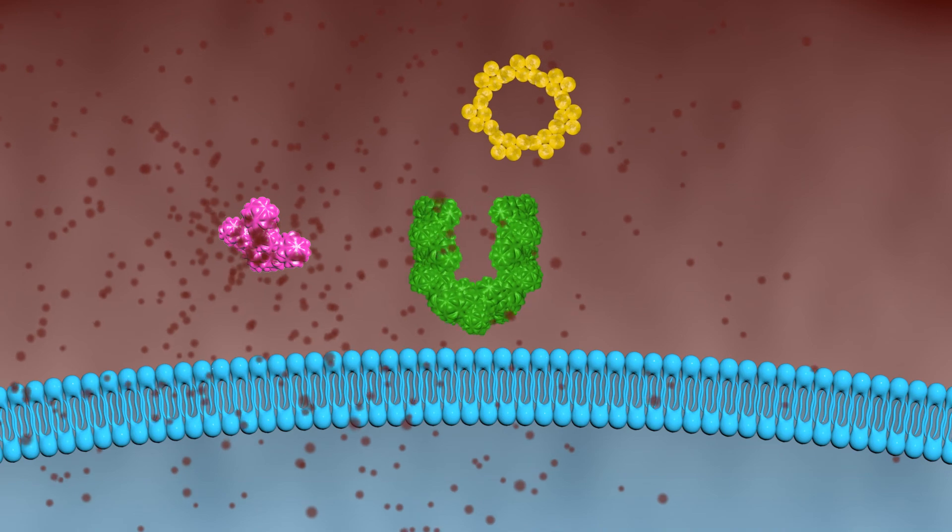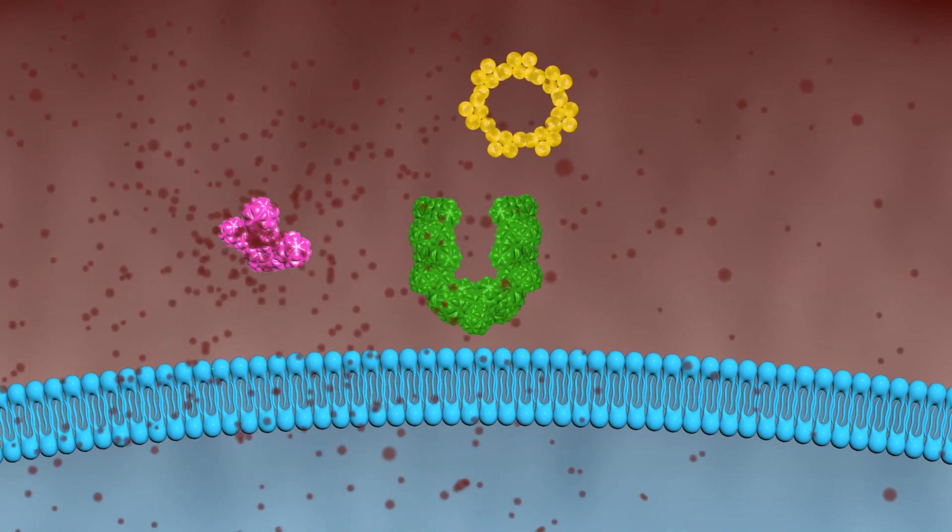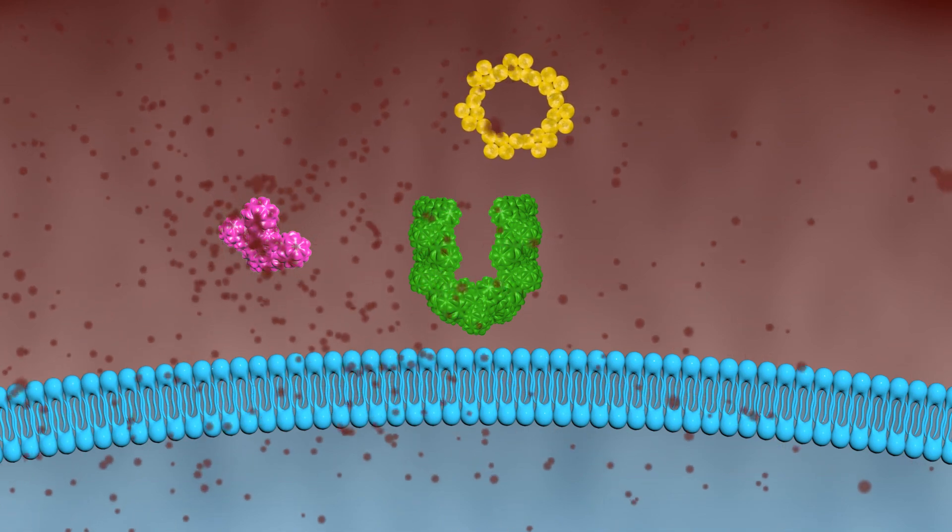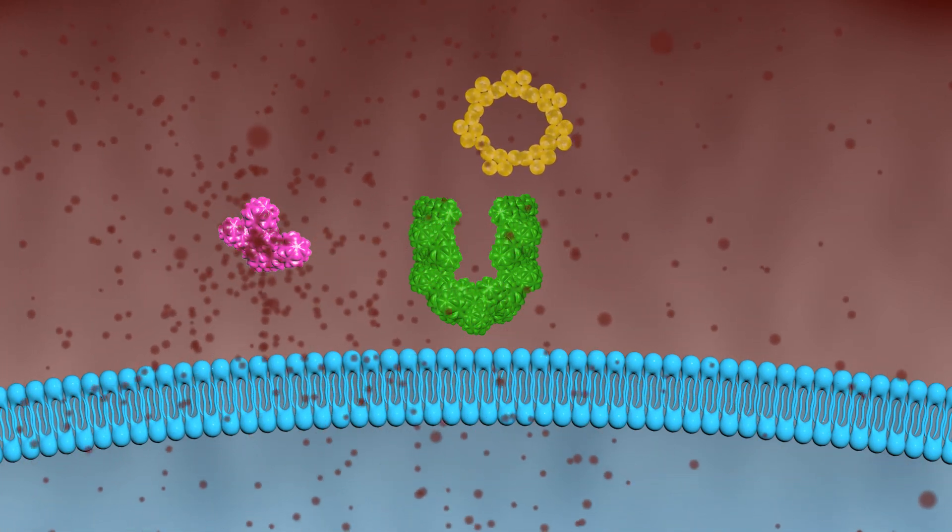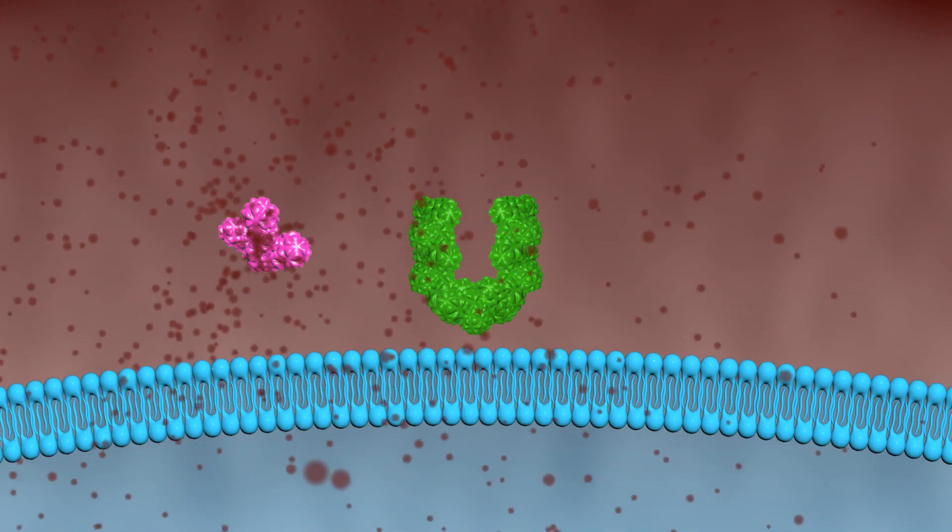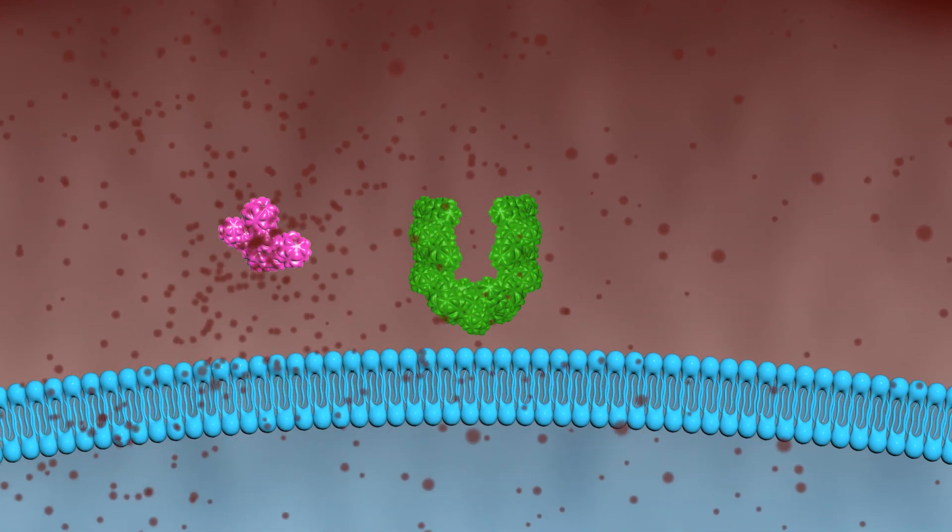These enzymes, which are capable of destroying beta-lactam antibiotics, are called beta-lactamases. They destroy the beta-lactam ring and render it incapable of binding to penicillin-binding protein, thus making bacteria resistant to the effects of antibiotics.